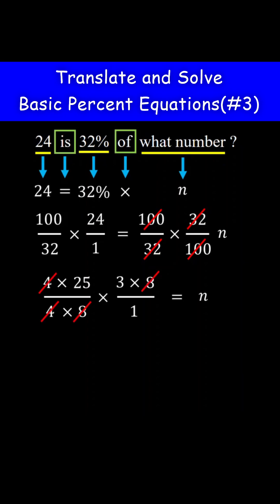We can cancel the 4. We can cancel the 8. In the numerator, we have 25 times 3, which is 75. In the denominator, we have 1. 75 divided by 1 is 75. So the answer is 75. 24 is 32% of 75.